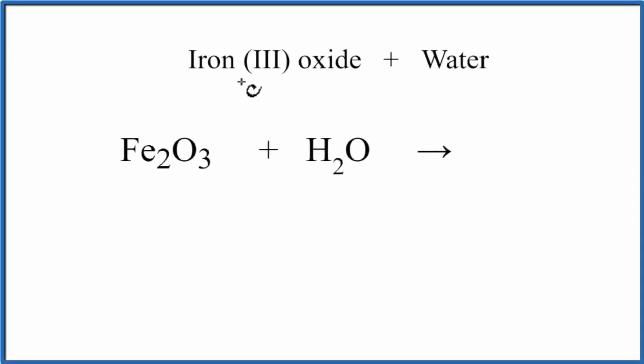In this video we'll look at what happens when we put iron three oxide plus water. So our iron three oxide Fe2O3, that's a solid. Water is a liquid, so we're putting a solid into liquid. Iron is a metal.